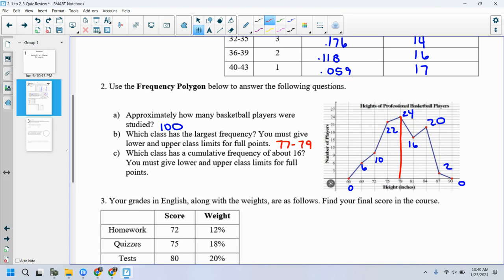So in this case, I'll say 77 to 79. Which class is a cumulative frequency of about 16? Okay. It's this class, right? So the 6 and the 10 to get to 16. Don't say this class up here. No, that's just frequency, not cumulative frequency. It's this class right here. So it's the 71 to 73.